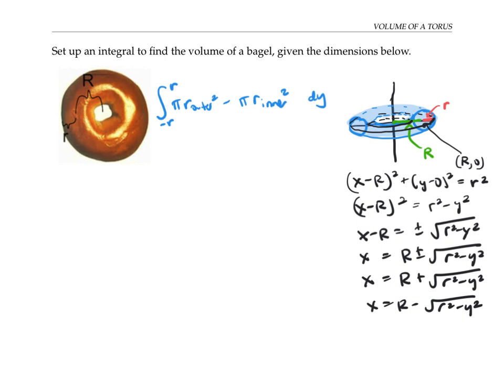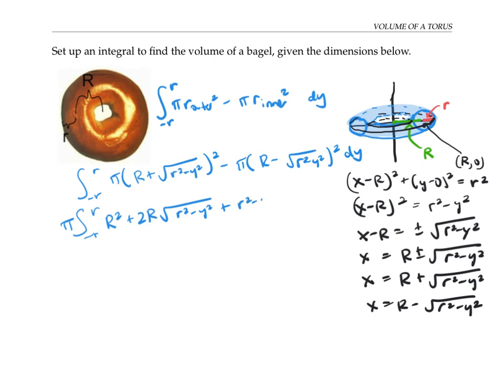Now I've got my integral set up, but I'm going to simplify to see if I can compute it. First, I'll pull out the π and square each of these terms. So I get R² + 2R√(r² - y²) + (r² - y²), and then I subtract the analogous terms from the other piece.